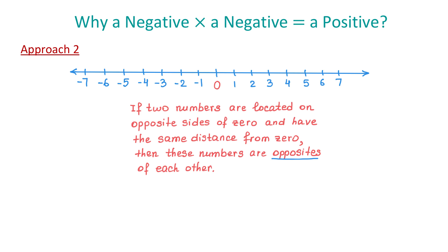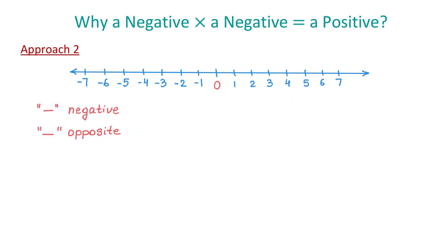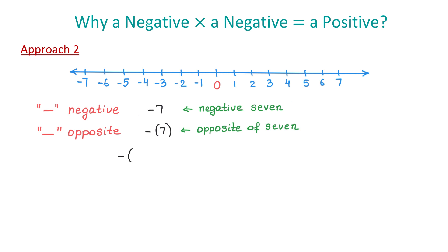Now, let's see how we can write these statements. The symbol we use for negatives is the same symbol we use for opposite numbers. This is how we write negative 7, and this is how we write the opposite of 7. As you see, when we write the opposite of a number, we write this number in parentheses. So, we can write that the opposite of 7 is negative 7, and the opposite of negative 7 is positive 7.